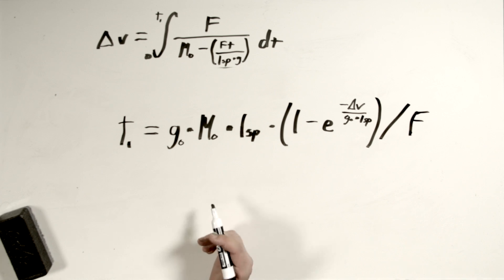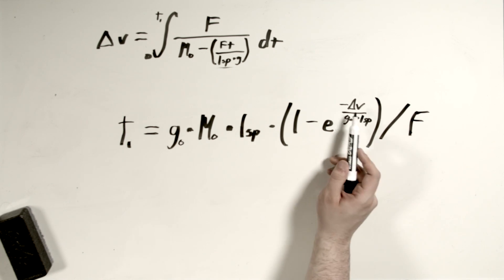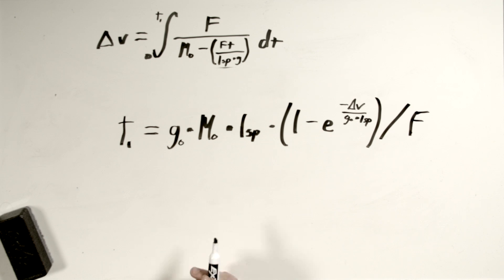Given that we know this g value, we know the starting mass, we know the specific impulse, and we know the delta v that we are going for. And when we go ahead and we plug that in, I ended up scripting that out. We'll go ahead and jump over and take a look at that real quick.